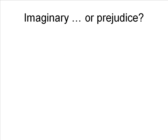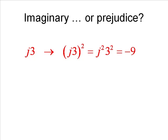Imaginary or prejudice? Let's see. If we say that j is imaginary because when we square it we get negative one — a negative number — let's try j3. We square j3 and we get j3 squared equals j squared times 3 squared, and that is of course negative one times nine, which is negative nine. So j3 squared gives you a negative number. By prejudice, we say j3 is also imaginary.